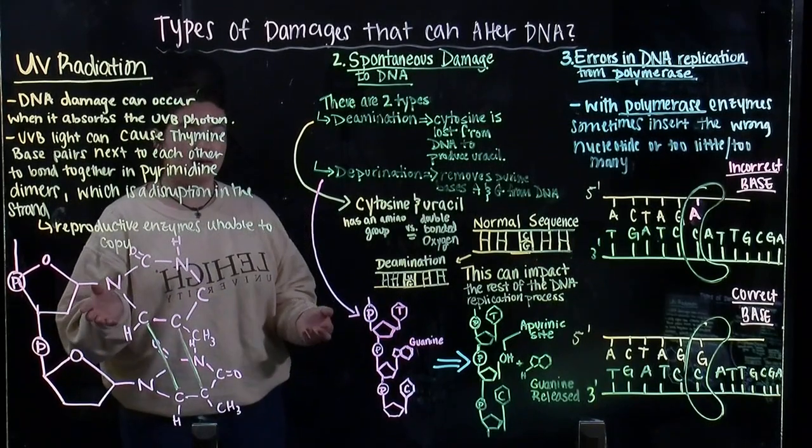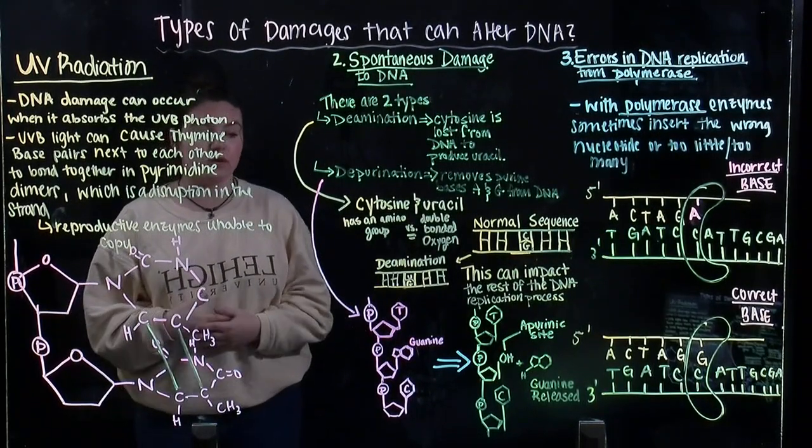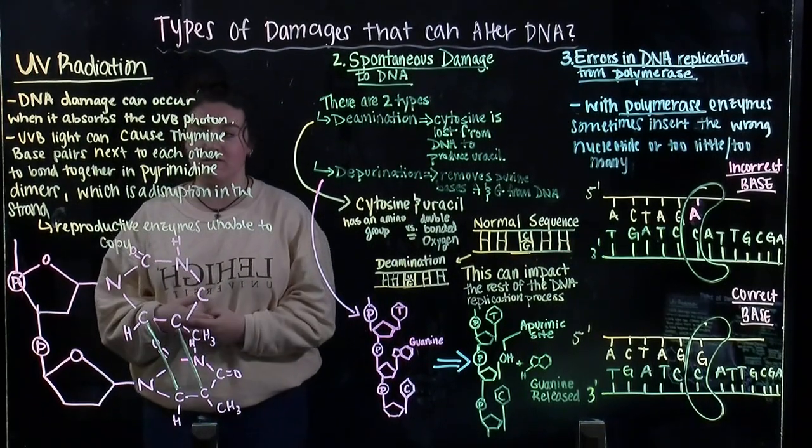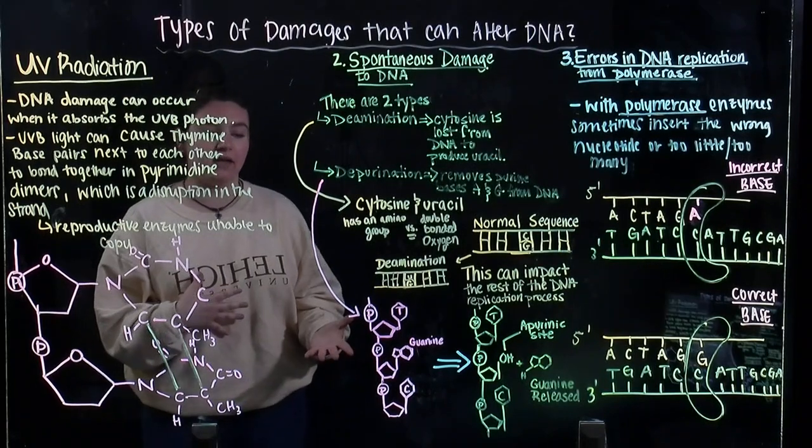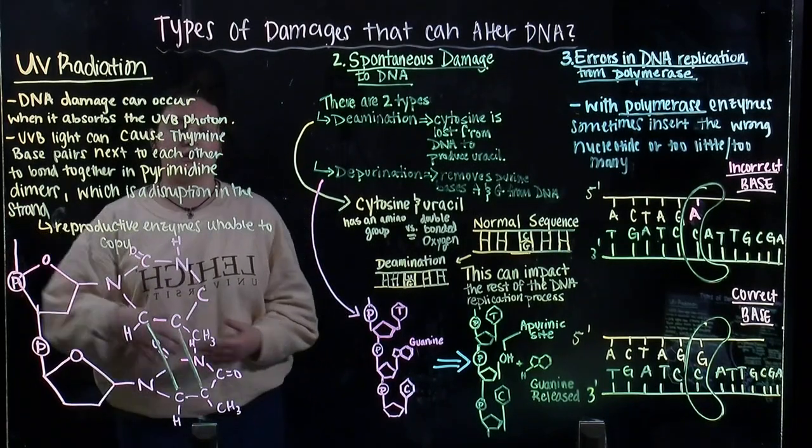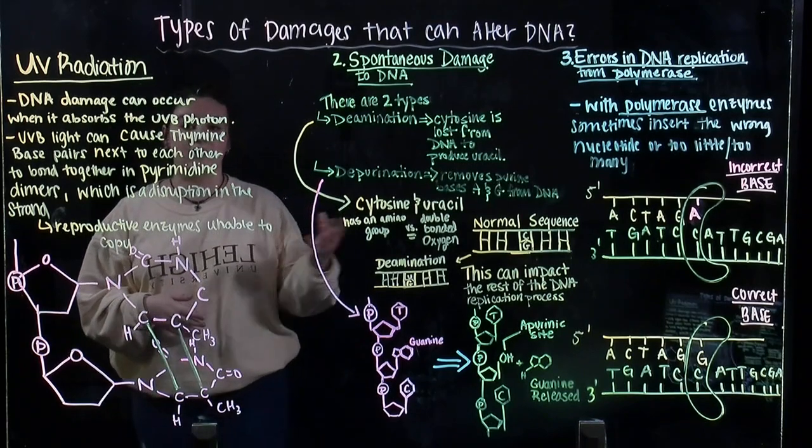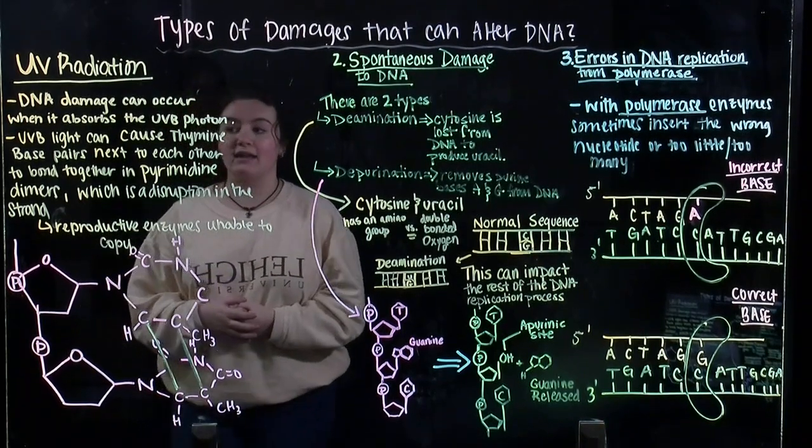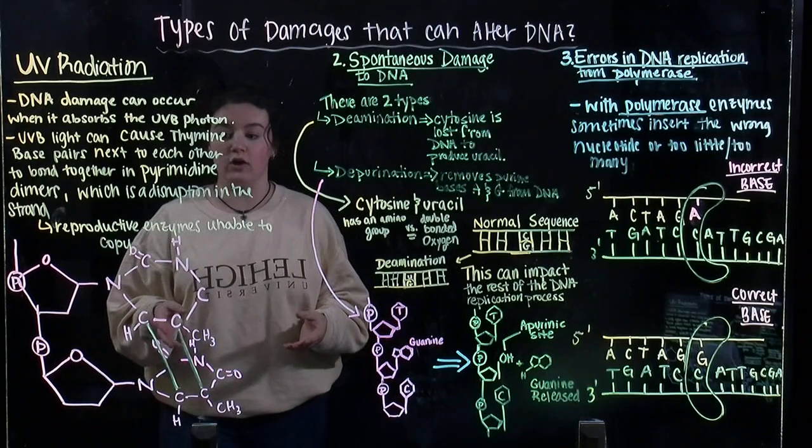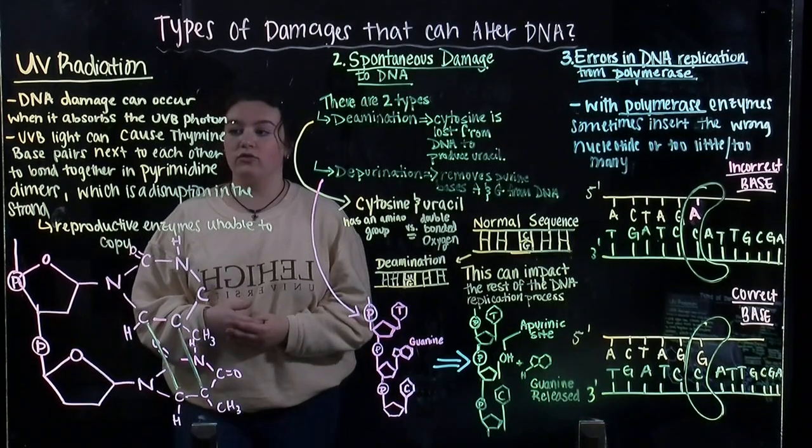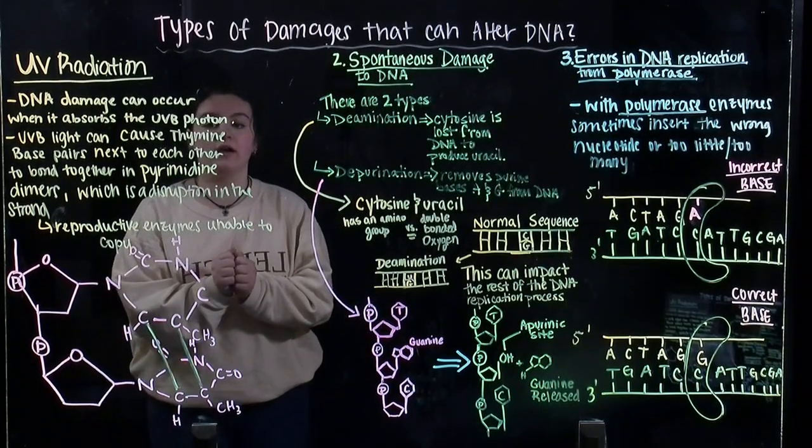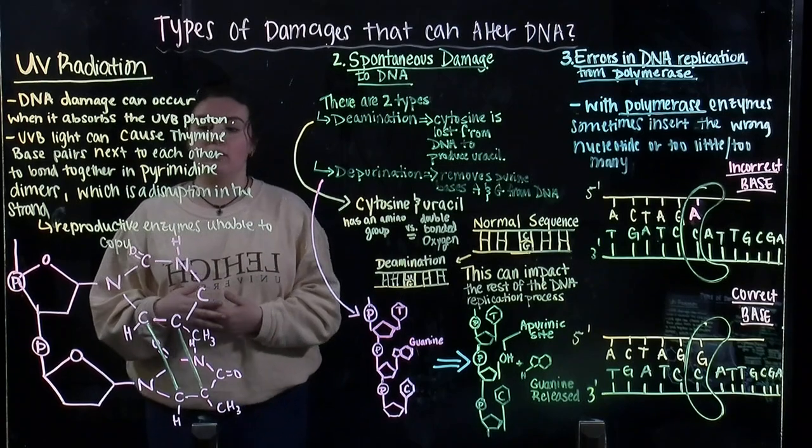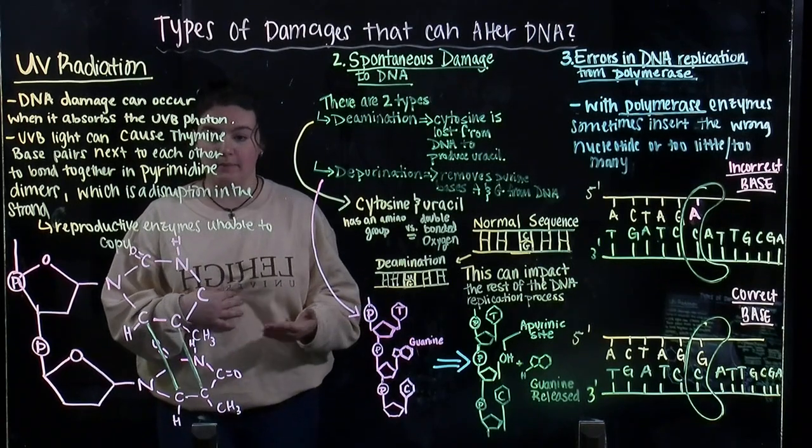As you can see here, the main idea is somatic mutations, which are spontaneous mutations that can occur in one's life. For example, UV radiation. UV radiation is when the damage takes up the UV photon and it causes the thymine-based pairs, which make up DNA, to form next to each other and form a pyrimidine dimer, which is a disruption in the bond and in the strand.